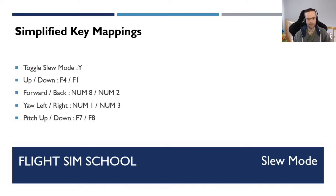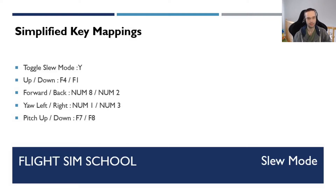Once you press Y, everything in the game is going to freeze and you can't control any of the flight surfaces anymore. Up and down allows you to go up or down with the F4 and F1 keys. Back and forward allow you to move the plane forward or backwards. Yaw left and right allow you to turn the plane left or right. And pitch up or down allows you to change the pitch of the plane.